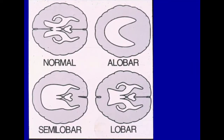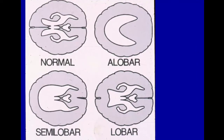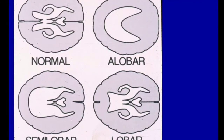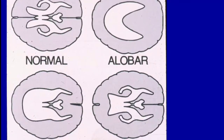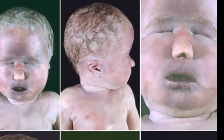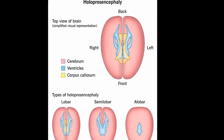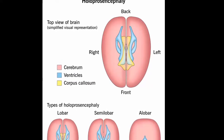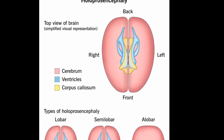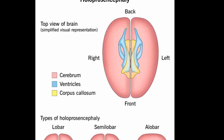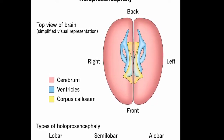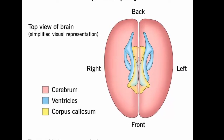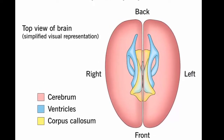Holoprosencephaly is a disorder caused by the failure of the prosencephalon, the embryonic forebrain, to sufficiently divide into the double lobes of the cerebral hemispheres. The result is a single-lobed brain structure and severe skull and facial defects. Holoprosencephaly is an abnormality of brain development in which the brain does not properly divide into the right and left hemispheres. The forebrain develops into parts of the adult brain, including the cerebral cortex. Instead of normal complete separation of the left and right halves, there is an abnormal continuity between the two sides.